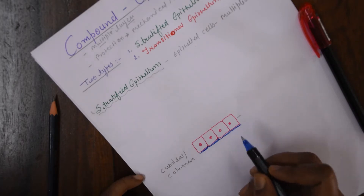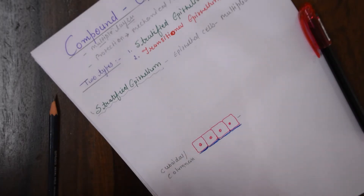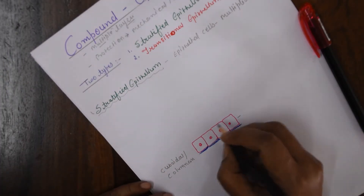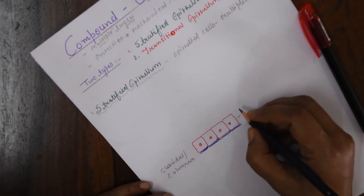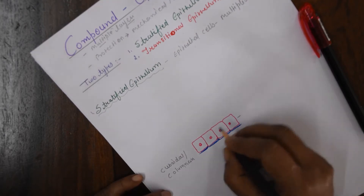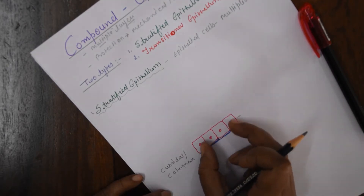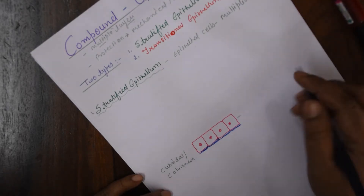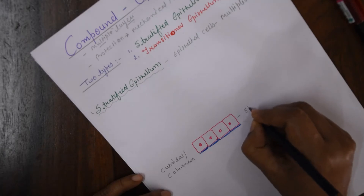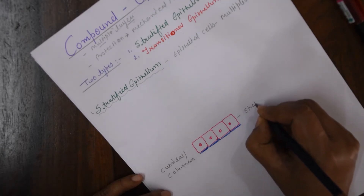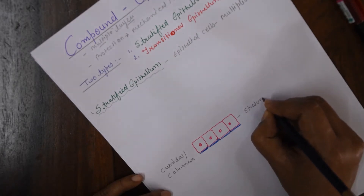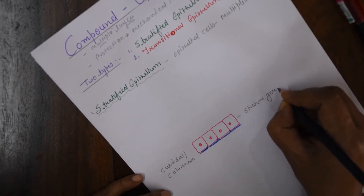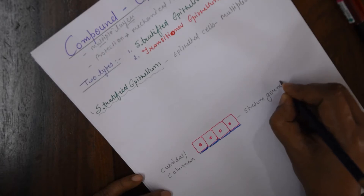These cells can divide mitotically, forming a layer called the stratum germinativum.